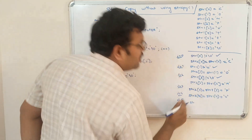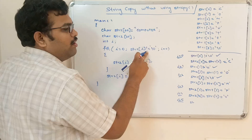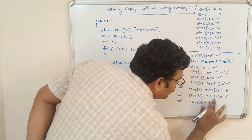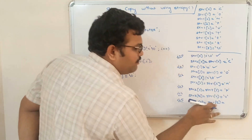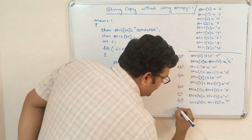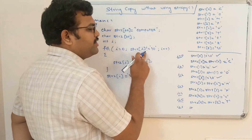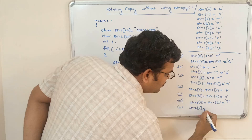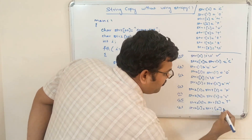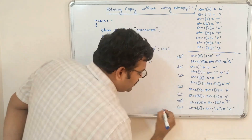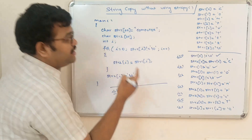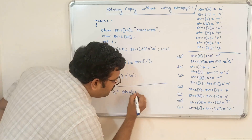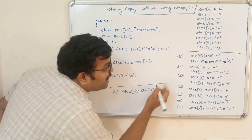When i=6, str1[6] is not equal to '\0', so str2[6] = str1[6] = 'E'. When i=7, str1[7]='R' is not equal to '\0', condition true, so str2[7] = str1[7] = 'R'.